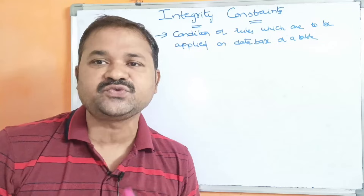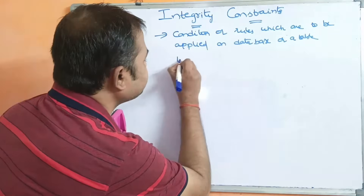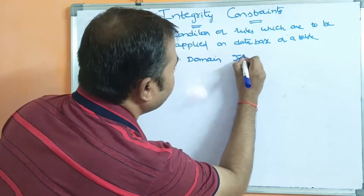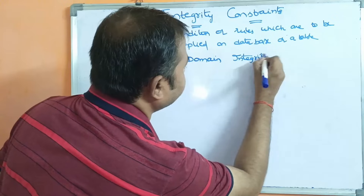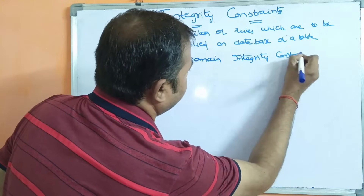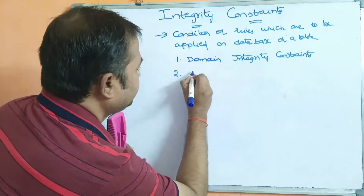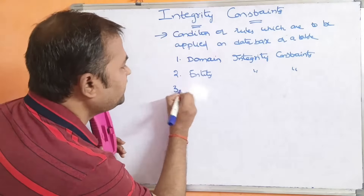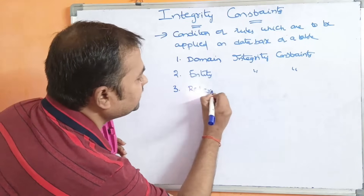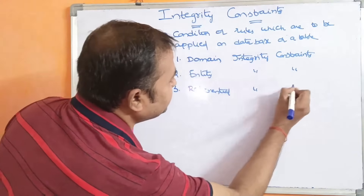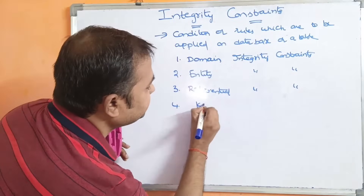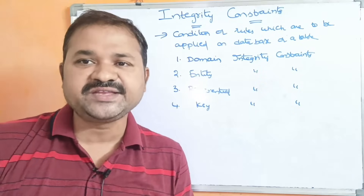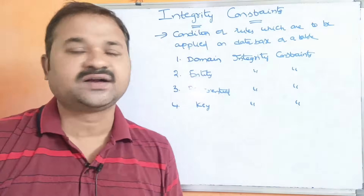Here, we can classify constraints into four types. The first one is domain integrity constraints. The second one is entity integrity constraints. The third one is referential integrity constraints. The last one is key integrity constraints. In this video, we are going to discuss about these four types of integrity constraints.